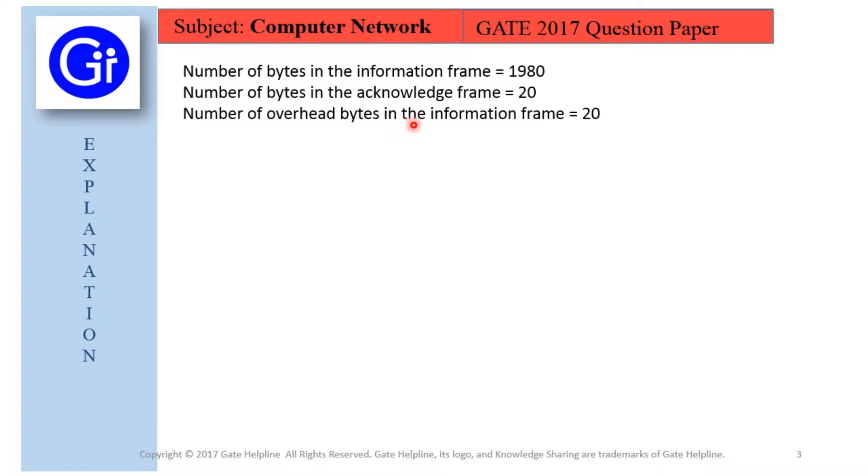So the transmission time for data is L upon B, that is length of the frame upon bit rate, which equals 1980 into 8, as we are given 1980 bytes, so we convert it into bits by multiplying with 8. For bit rate we are given 1 Mbps, so we convert 1 Mbps into 10 raised to power 6 bits per second. By solving this we get 15.84 ms as the transmission time for a data frame.